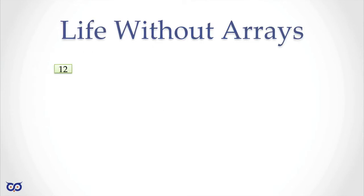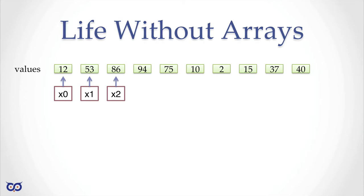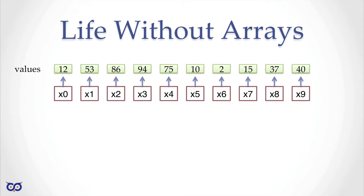Let's say I had some numbers — for example 12, 53 — it doesn't matter what they represent; could be test scores or inventory counts. I have 10 of them. Now, without arrays, if I told you to store these numbers in your program, you'd have to create a variable for each one: x0 for the first, x1 storing 53, x2 storing 86, x3 storing 94, and so on — 10 variables each with different names.